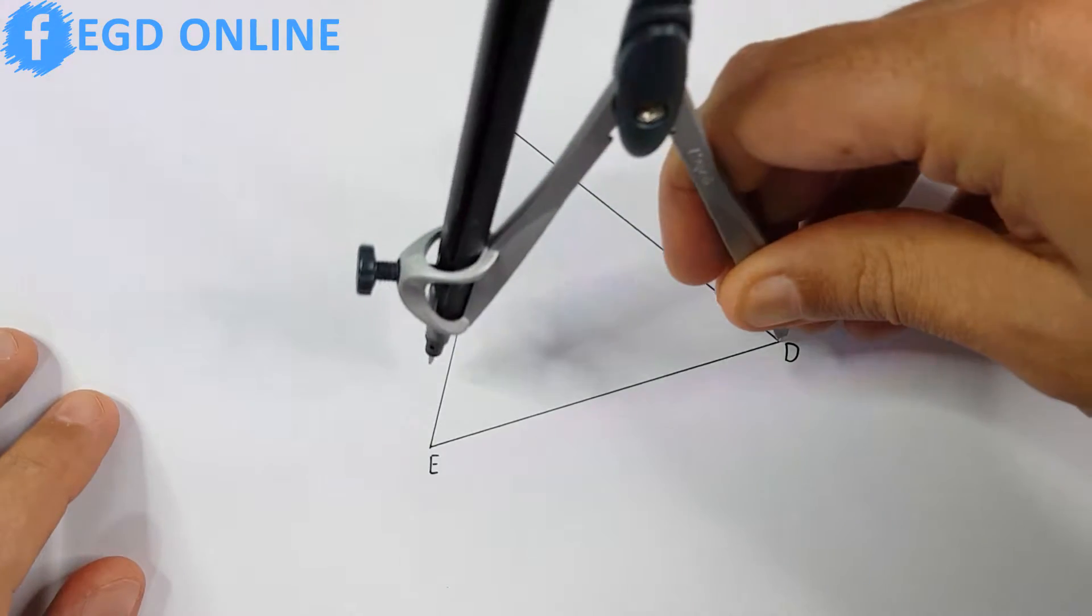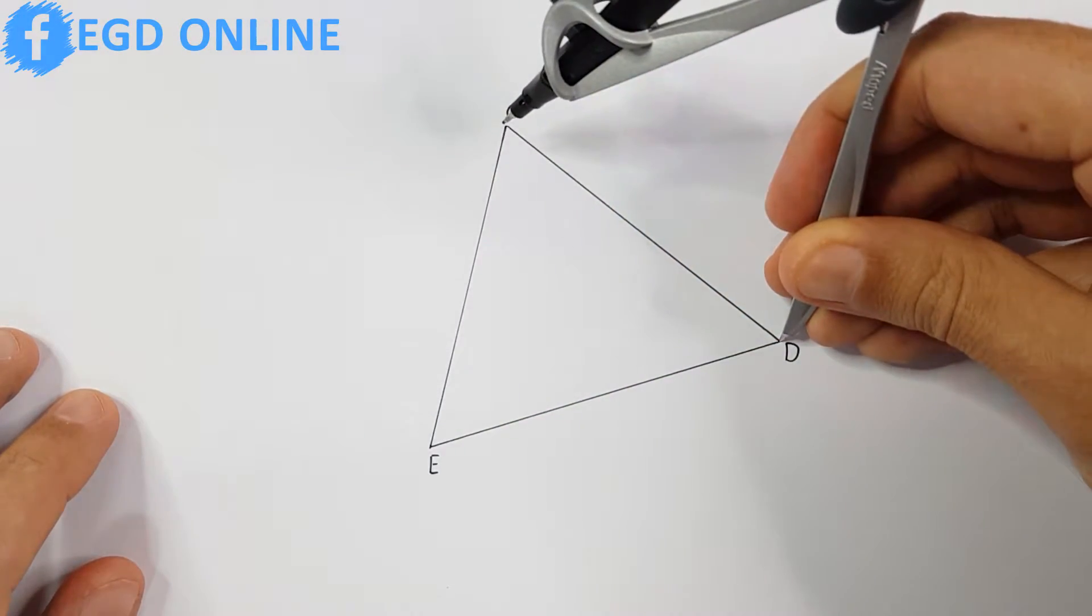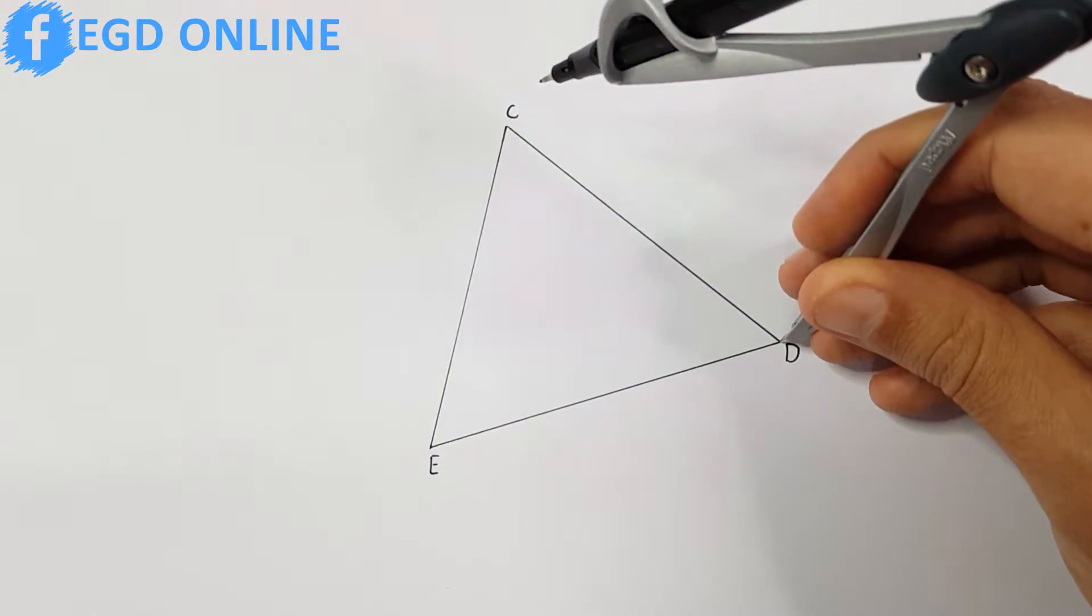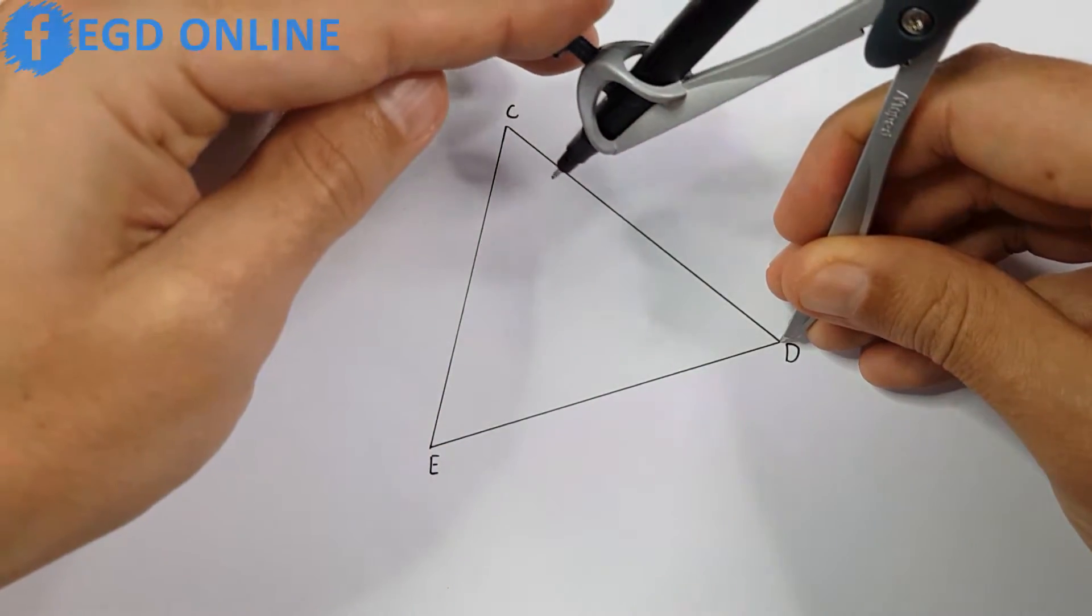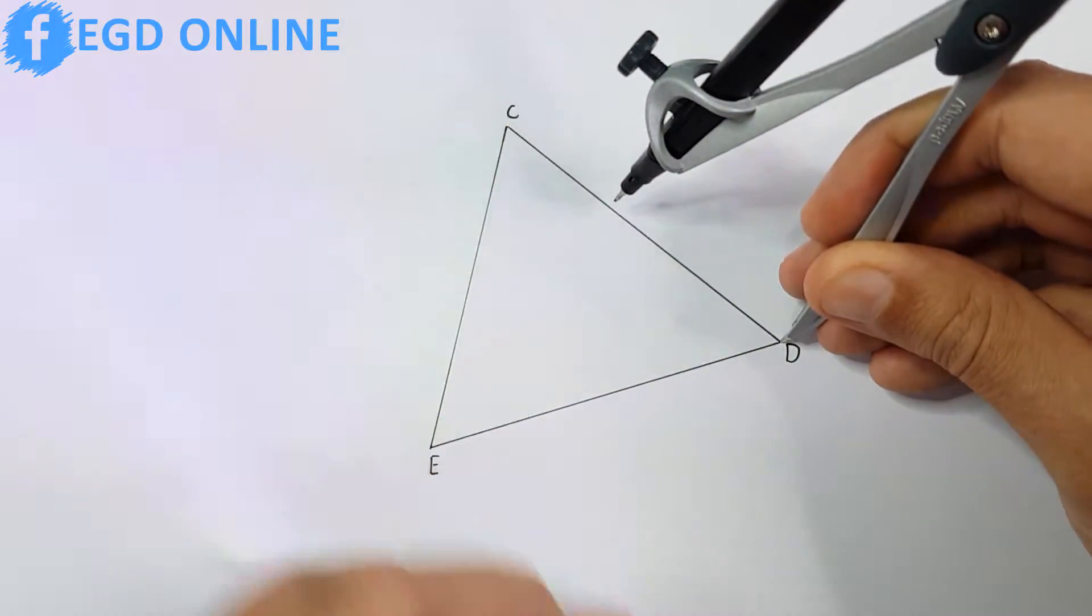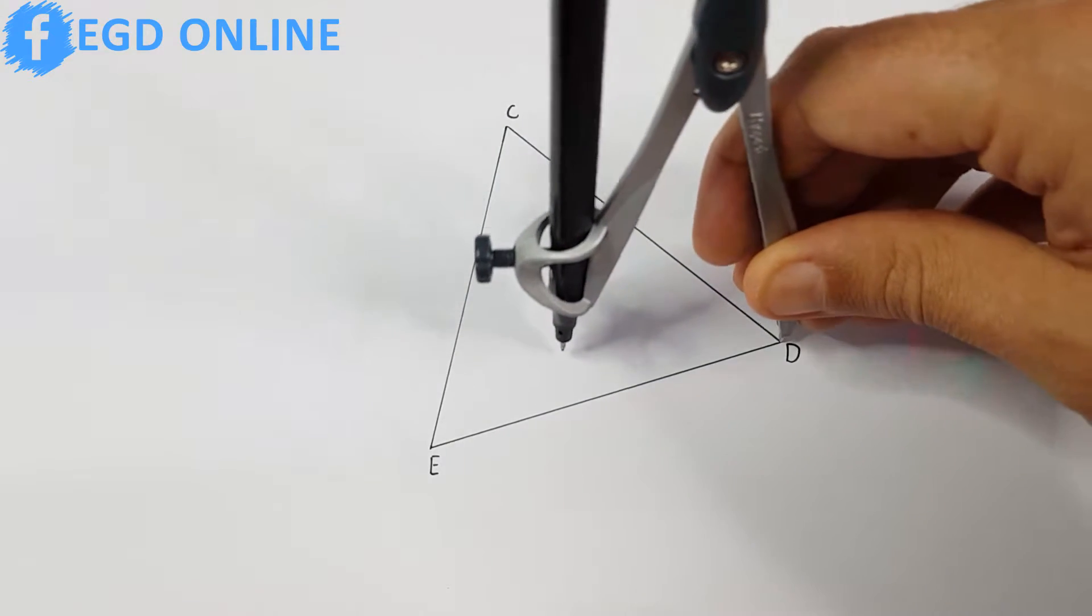Using the full length of the side to apply the middle point method might use a lot of space. So instead of doing that, adjust your compass just to more than half the length of the side.